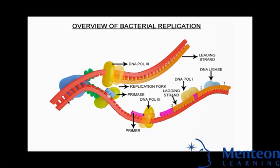As DNA polymerases can only extend a DNA strand in a 5' to 3' direction, different mechanisms are used to copy the anti-parallel strands of the double helix. In this way, the base on the old strand dictates which base appears on the new strand and the cell ends up with a perfect copy of its DNA.